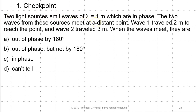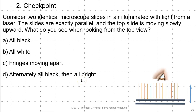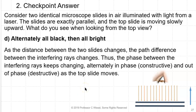Two light sources emit waves of λ = 1 m which are in phase. Wave 1 travels 2 m and wave 2 travels 3 m to reach a distant point — when they meet they are in phase because they differ by exactly one wavelength. Consider two identical microscope slides in air illuminated with laser light from above. The slides are exactly parallel and the top slide is moving slowly upward. Looking down from the top, you first see black, then bright, then black, then bright, alternating. As the slides move apart, the path difference between the interfering rays changes, and thus the phase keeps changing alternately out of phase and in phase.